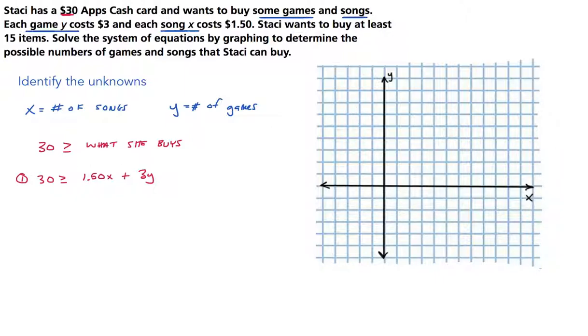The second equation seems pretty easy, but it always seems to be the one that students forget. It's the second detail right here. It says Stacey wants to buy at least 15 items. The at least is kind of important right there. If she's trying to buy at least 15 items, we know that the amount of items she buys must be greater than or equal to 15.